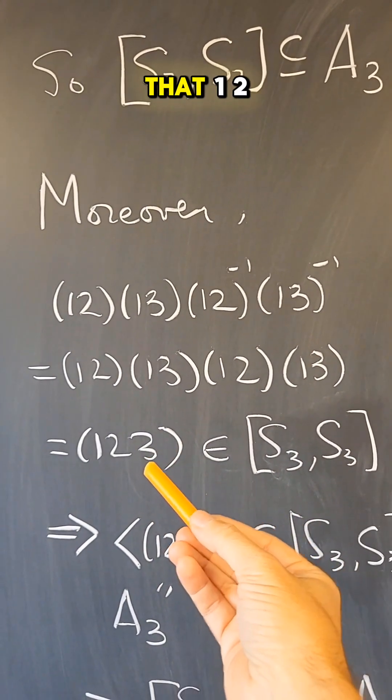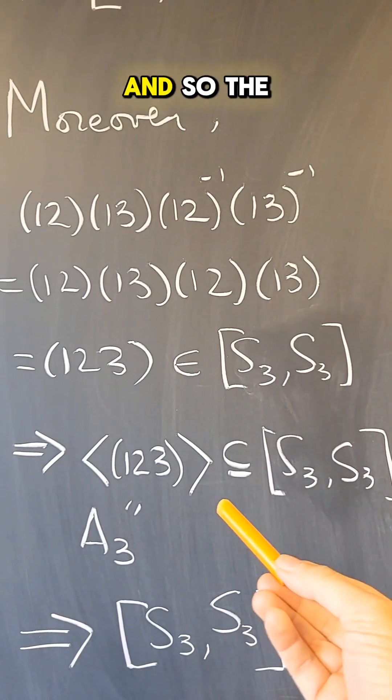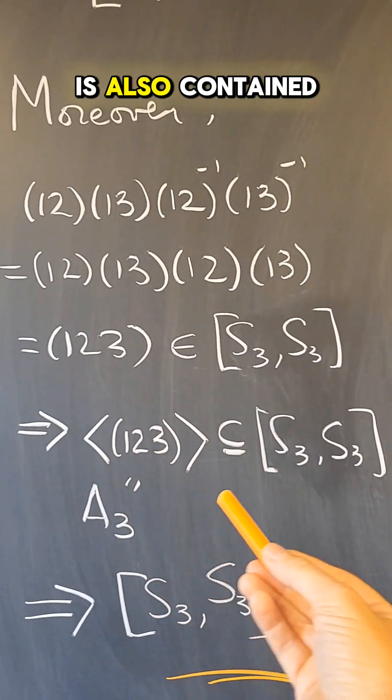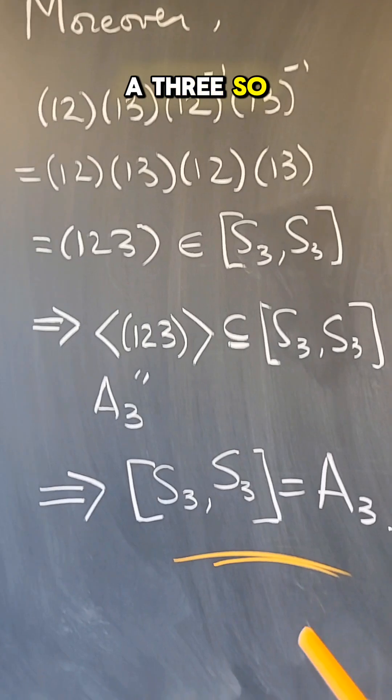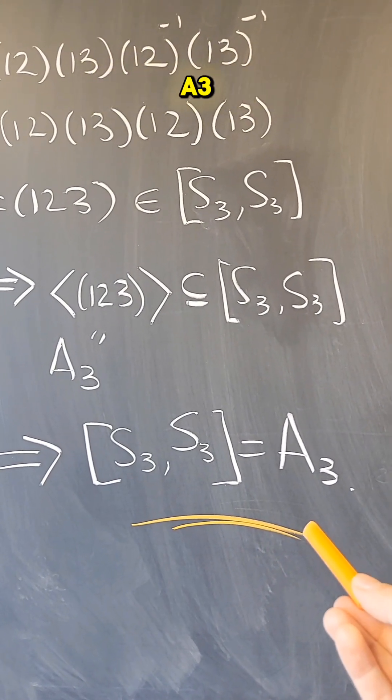So that means that (1,2,3) is a commutator, and therefore it is contained in the commutator subgroup. And so the subgroup generated by that one element is also contained in the commutator subgroup. But this is A3. So what we've proved is that the commutator subgroup is actually all of A3.